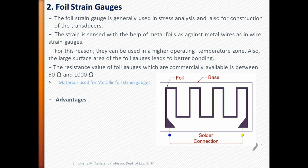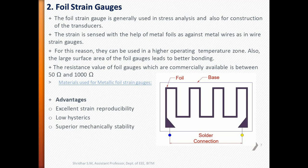The advantages of foil strain gauges are excellent strain reproducibility and low hysteresis, superior mechanical stability under prolonged strain and higher temperature conditions. These can be used for higher currents. Since terminals have no stress connection due to the absence of joints, these have long life. These can also be economical on mass production. This is about the foil strain gauges.